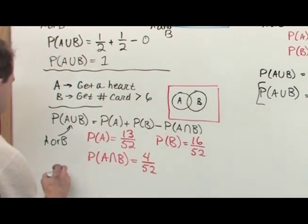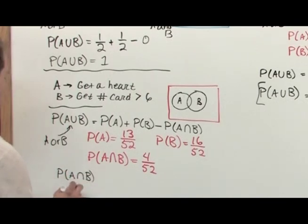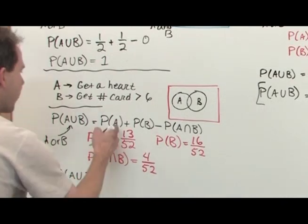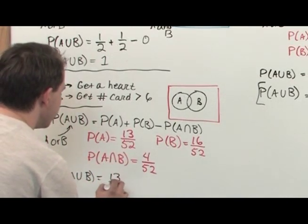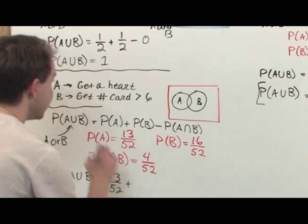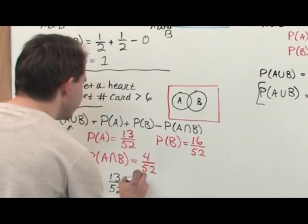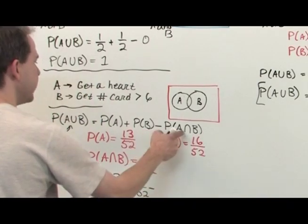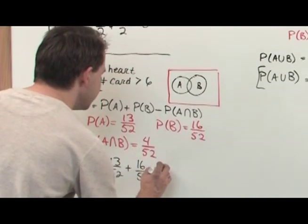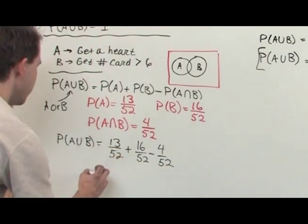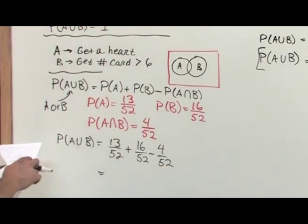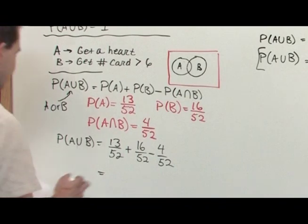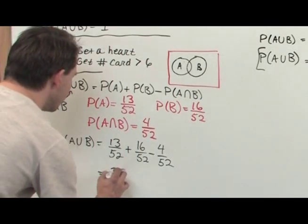We have everything we need. So the probability of A union B, which is A or B, is going to equal probability of A, which is 13 over 52, plus the probability of B, which is 16 over 52, minus the intersection of the 2, 4 over 52. When you actually do this, 13 plus 16 minus 4, you're going to get 25 over 52.